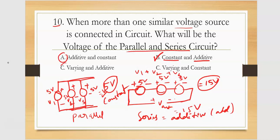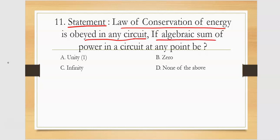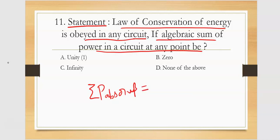Going to the next question — a statement question. What is the statement of the law of conservation of energy? The law of conservation of energy is obeyed in any circuit, whether it may be linear, parallel, passive, active, bilateral, or unilateral — any circuit. The law of conservation of energy states that the algebraic sum of power in a circuit at any given point of time — the summation of power absorbed should always be equal to the sum of power supplied.